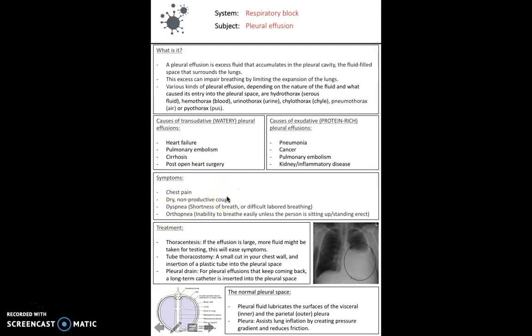Symptoms, again, we've kind of covered this, but chest pain, a non-productive cough, shortness of breath or difficulty breathing are the main symptoms they'll present with. And again, you want to treat this with potentially a thoracostomy, so a small cut in the chest and then inserting that plastic tube into the pleural space to drain that fluid. So pleural drain and thoracentesis as well, if the effusion is really large, you might want to take a bit of extra fluid for testing.